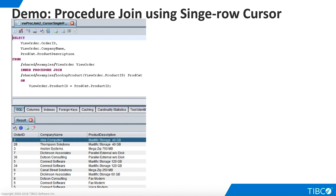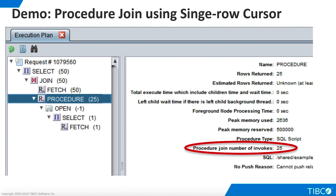Next, let's try a procedure join using the LookupProduct procedure from the TDV examples folder. This procedure returns a single row cursor, and we can see that the procedure join lets us work with cursor responses just as easily as we worked with scalars. Again, we see that procedure execution was only required 25 times, even though 50 unique rows were ultimately returned. This is because the view on the left side of the join only contains 25 unique values used as input parameter for the procedure.